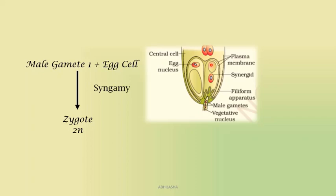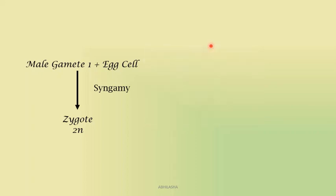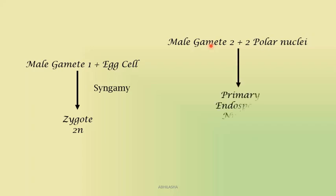Besides the egg apparatus, there are two polar nuclei in the center of the ovule. The second male gamete moves towards these polar nuclei and fuses with them to form the primary endosperm nucleus, or PEN. Here three nuclei are fusing — the two polar nuclei and the male gamete — so this is known as triple fusion.